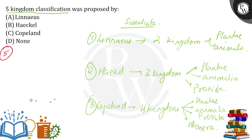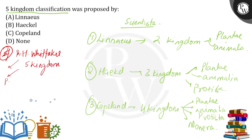Then came another scientist, R.H. Whittaker. He said four kingdoms are not enough to classify all the different kinds of organisms, so he proposed five kingdom classification, which included Plantae, Animalia, Protista, Monera, and then he proposed another kind — Fungi.